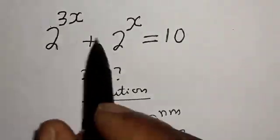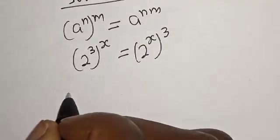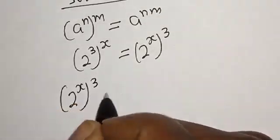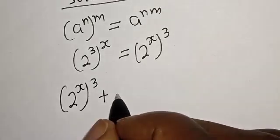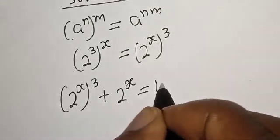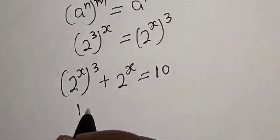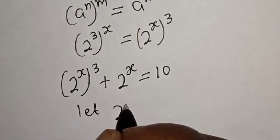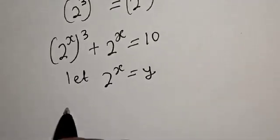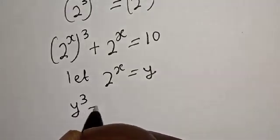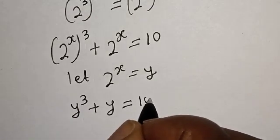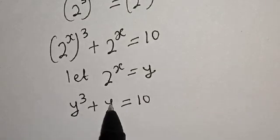Let's substitute back. We have 2 raised to power s, to the power of 3, plus 2 raised to power s, is equal to 10. Then, let's say 2 raised to power s is equal to y. We have y raised to power 3 plus y is equal to 10.